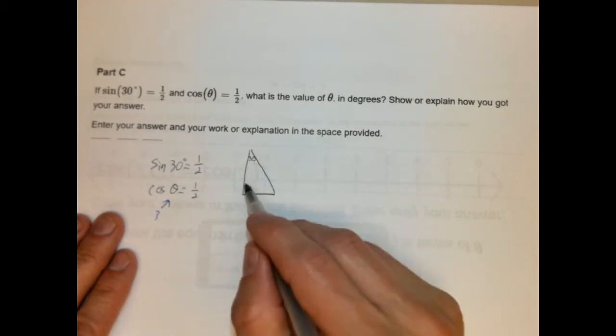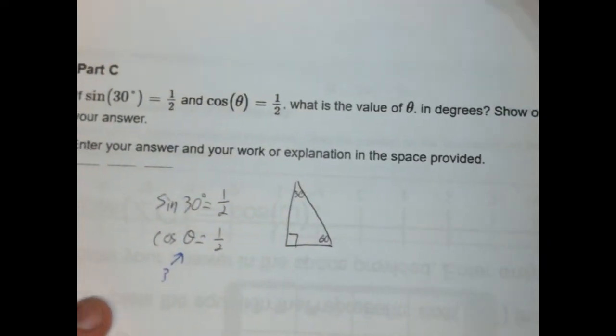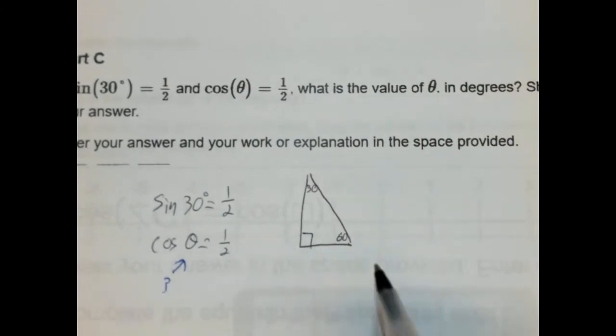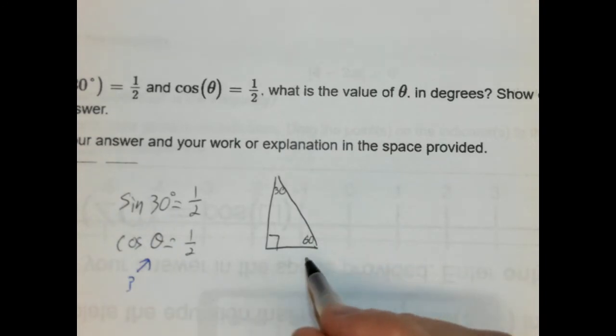Okay? Now, this is going to be our 30 degrees, right? Here's our 30. Right? And if this is 30, this is 90, well, this has to be 60. So we're talking about a special right triangle here. All right? Let me zoom in a little more so you can see it a little better. It's a little small. Okay? So, okay.